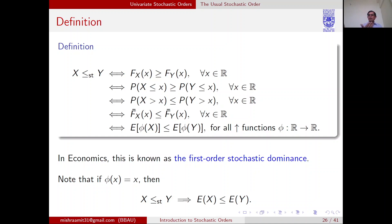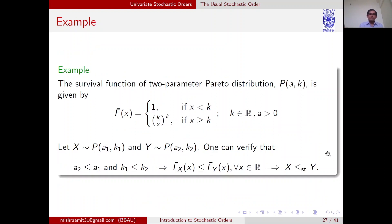There must be examples and counter-examples for any definition. We have already seen the counter-example in the case of the Weibull distribution, because the survival functions cross each other, so there is no usual stochastic order between those two Weibull distributions. Now we look at an example using the two-parameter Pareto distribution.